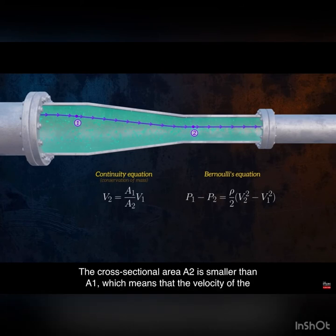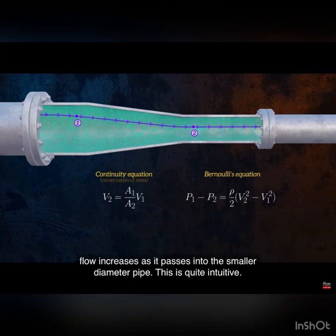The cross-sectional area a2 is smaller than a1, which means that the velocity of the flow increases as it passes into the smaller diameter pipe. This is quite intuitive.